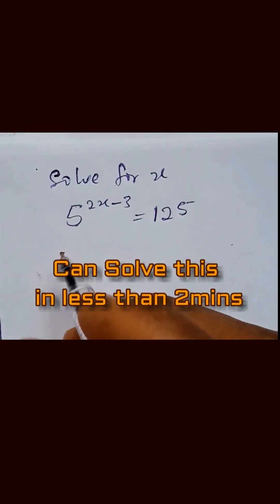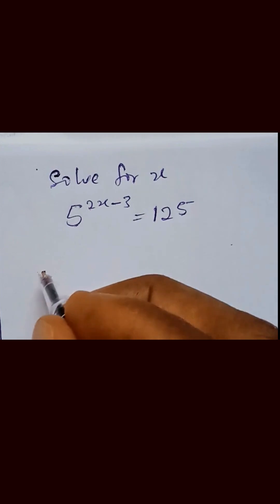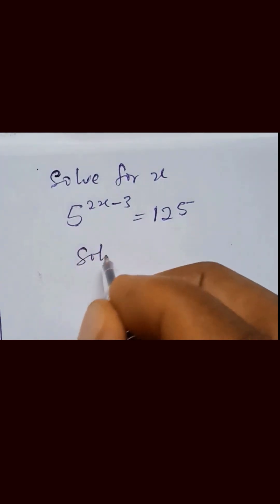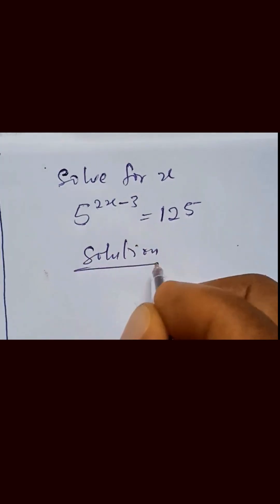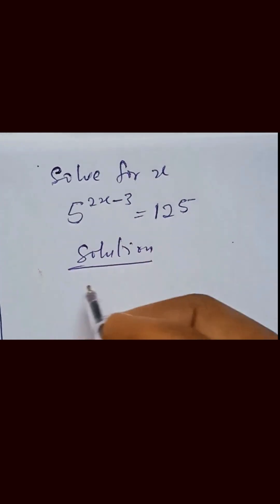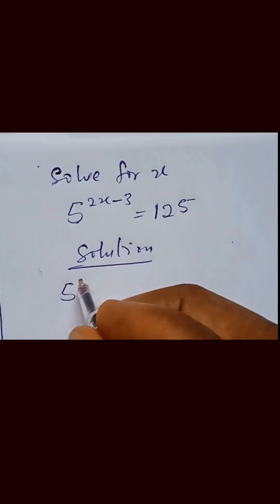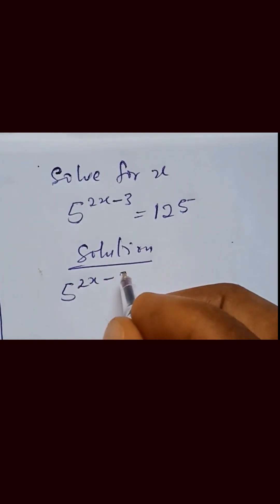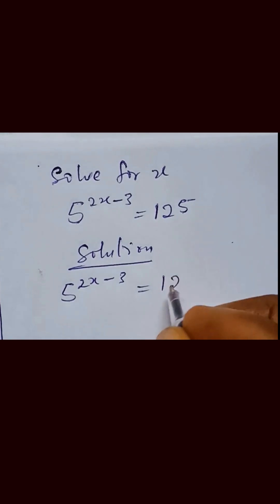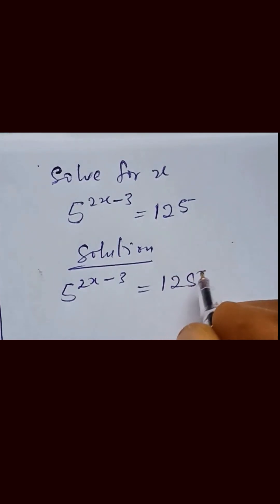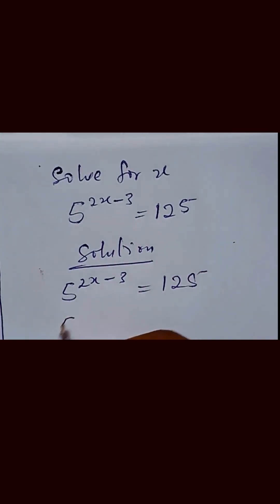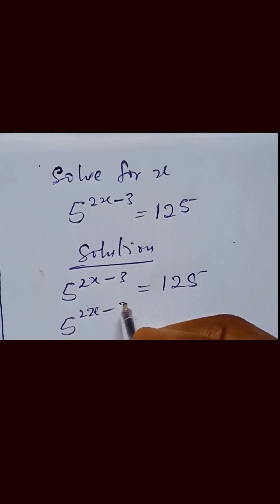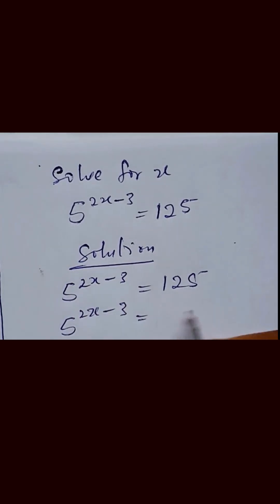We want to get the value of x. So we have the solution: x raised to the power 2x minus 3 equals to 125. We can rewrite this as 5 raised to the power 2x minus 3 equals to 5 raised to the power 3.